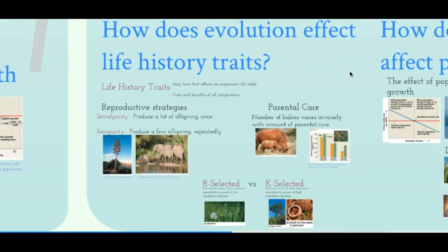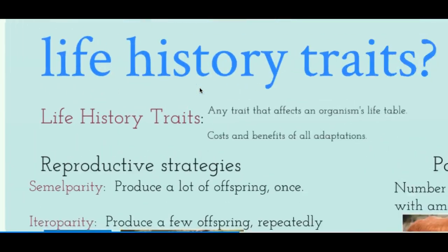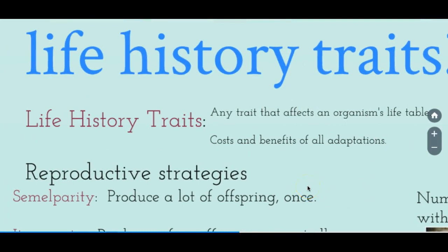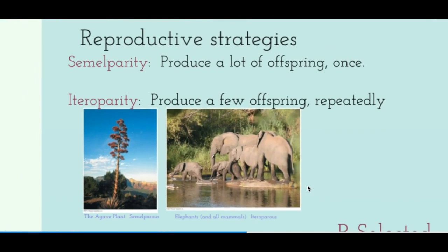Life history describes an organism's entire life — how many offspring it produces, when it can reproduce, and how many of those offspring survive. A life history trait is any trait affecting an organism's life table — the death rate and birth rate. Life history traits form because of the costs and benefits of all adaptations. For example, making many offspring costs a lot of energy, but more offspring means a greater potential for some to survive, which is critical for survival and reproduction in evolutionary terms.